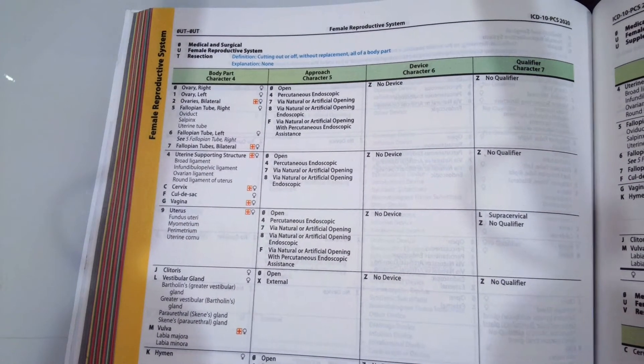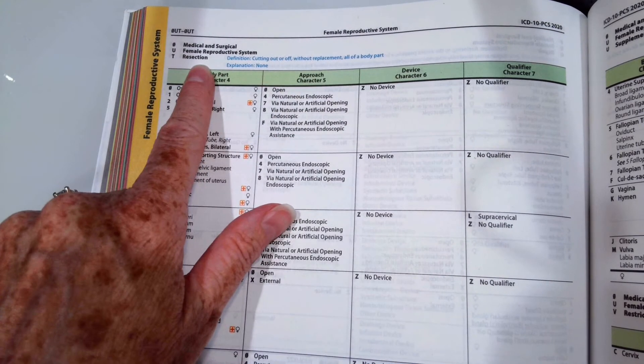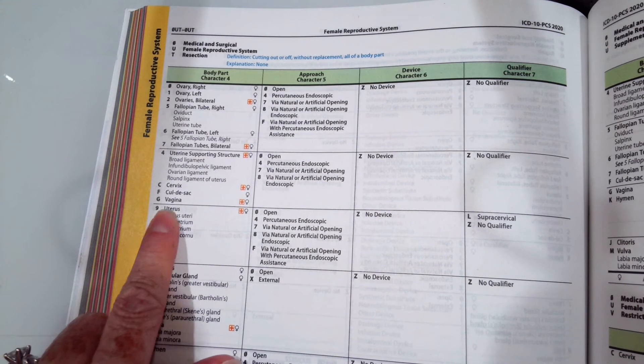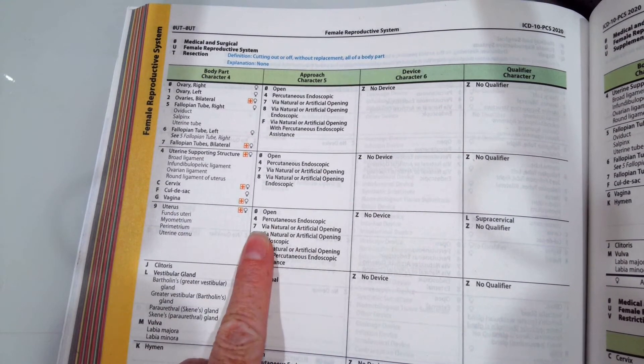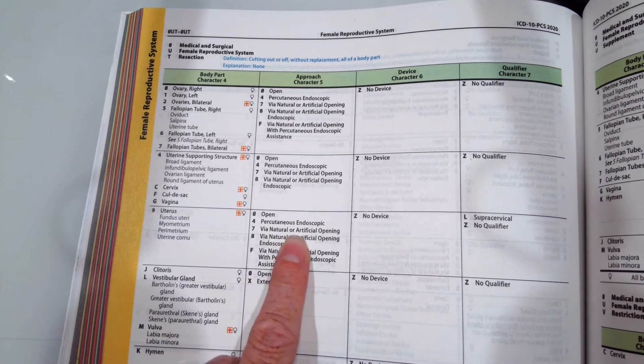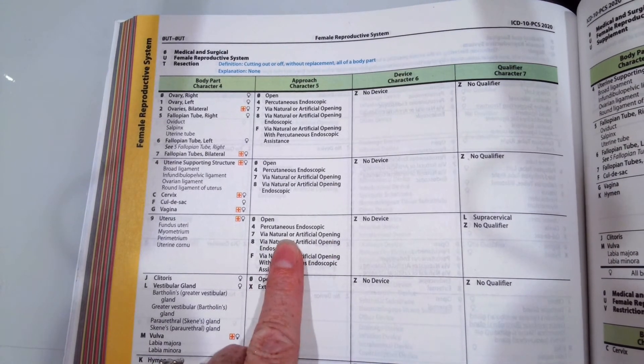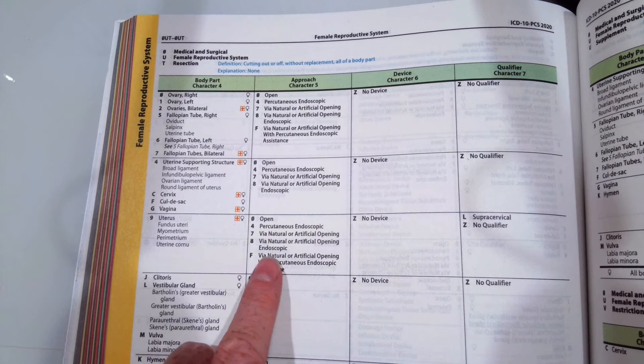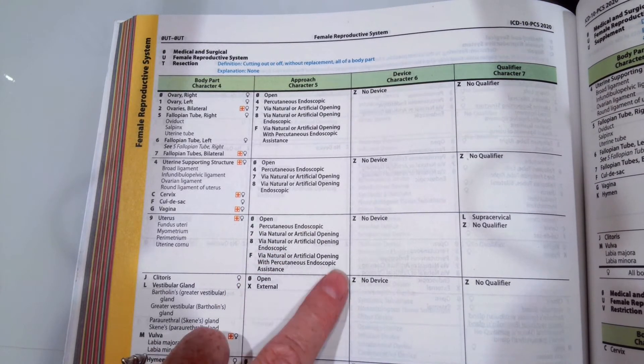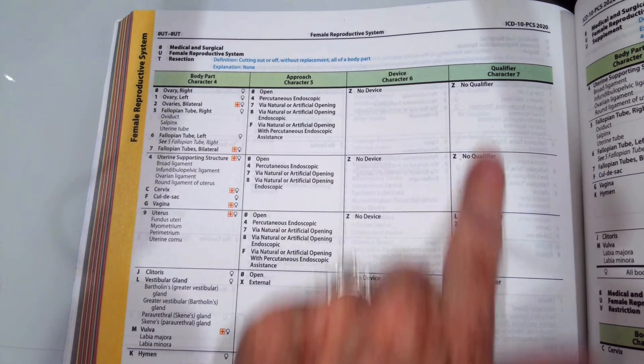There's table 0-U-T. The table is always at the top. The definition of the root operation is always right beside the third character. And then we have to find our character 9 for uterus. Ours was vaginal, so we would pick character 7 for our approach by a natural or artificial opening because the vagina is already open. We're not opening it. We didn't go in with a scope, so we're not using 4, 8, or F because those all have endoscopic. We're doing 7. Then our character device, no device.